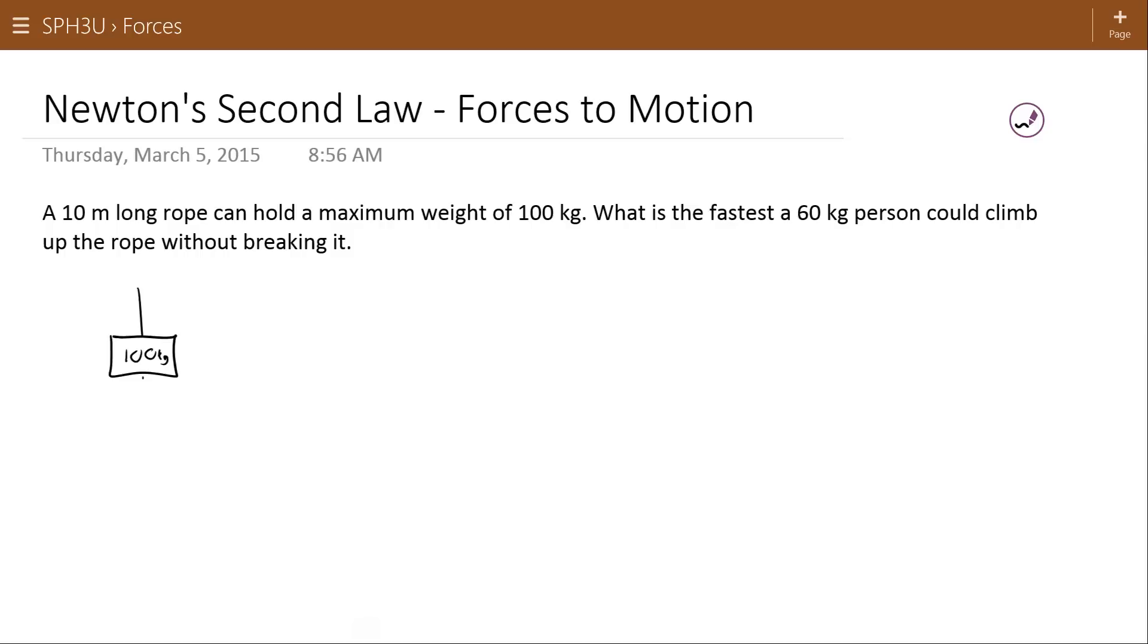What that means then is if that was what was happening, the rope would be supplying a force of tension to match the force of gravity on the 100 kilogram object. Here we're going to use our simplified gravitational formula. We don't know that this object is on Earth, but I think it's safe to assume. So what that means then is for the rope to be able to hold up that 100 kilogram object, it must be able to supply a 980 Newton force in the upward direction.